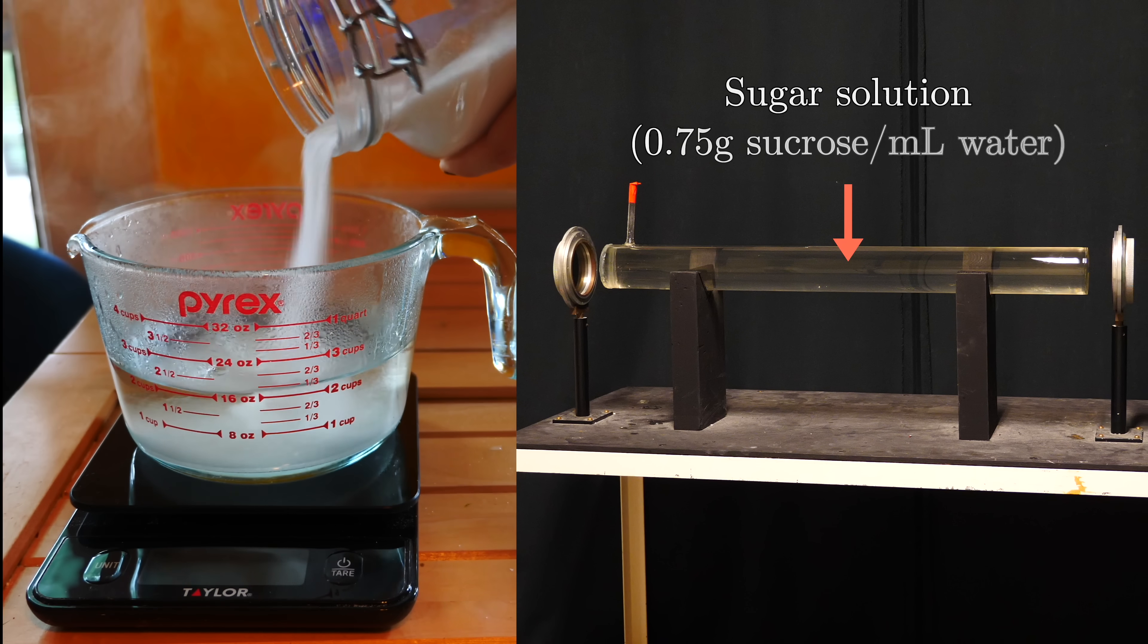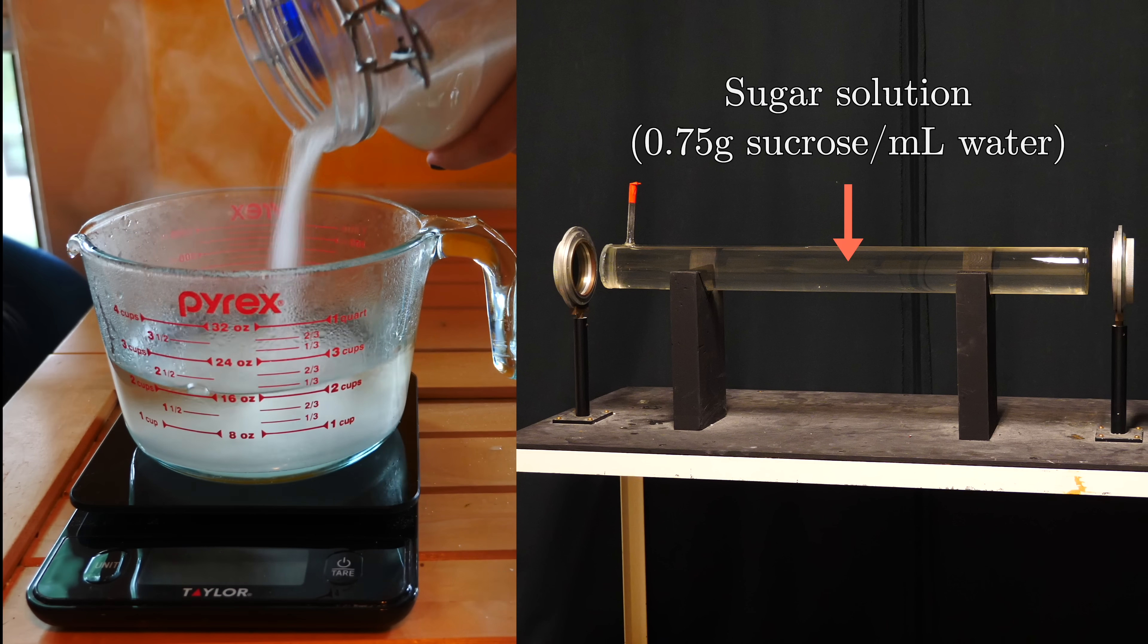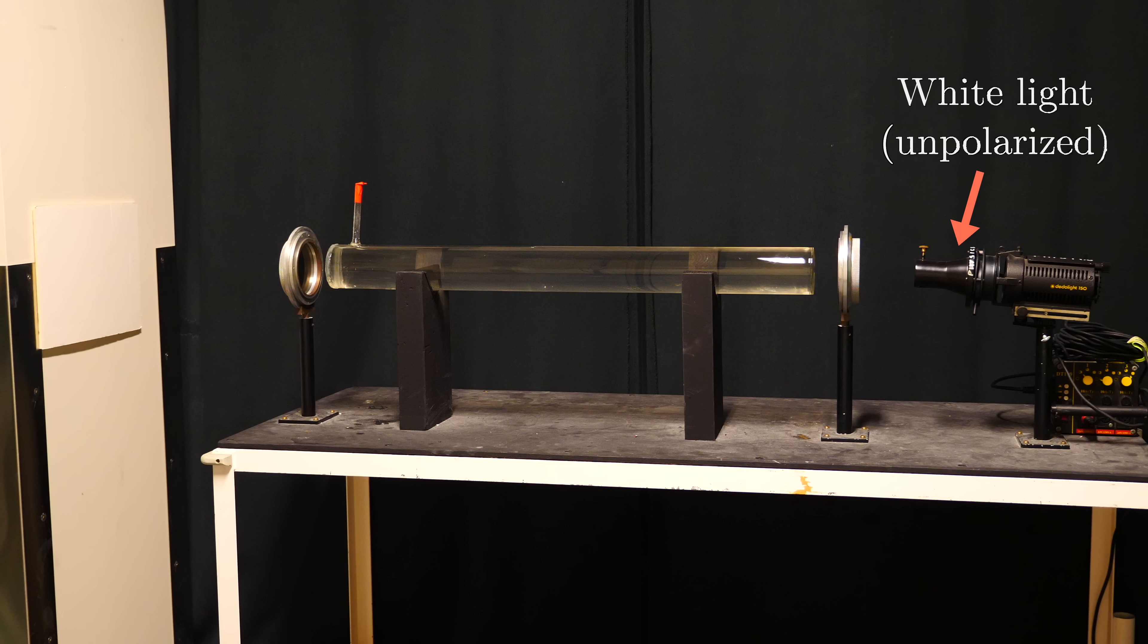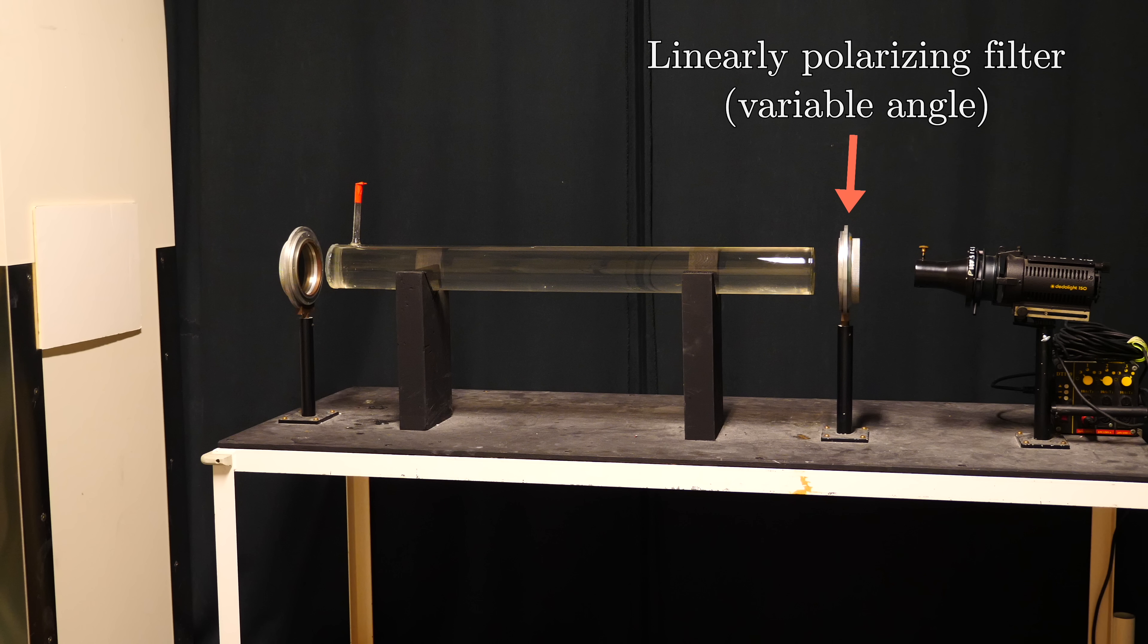The setup here starts with a cylinder full of sugar water, and we're about to shine some white light into it. But before it gets there, it passes through a linearly polarizing filter.